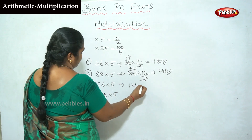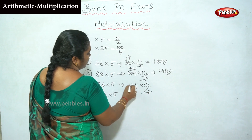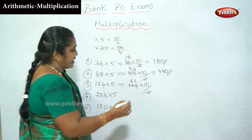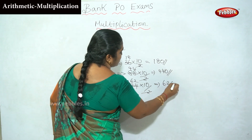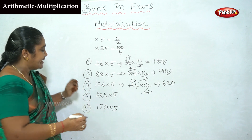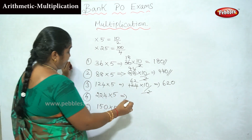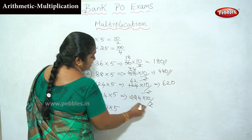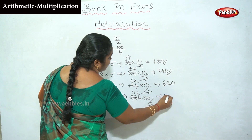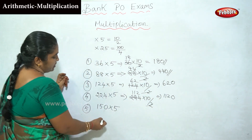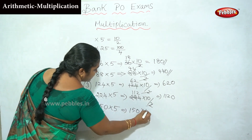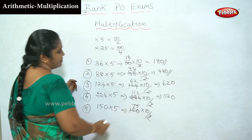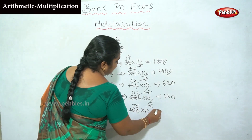Next, 224 into 5: multiply by 10 to get 2240, divide by 2 gives 1120. Then 150 into 5: 150 into 10 by 2 — cancel and get 75, so the actual answer is 750.